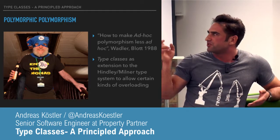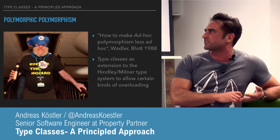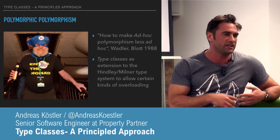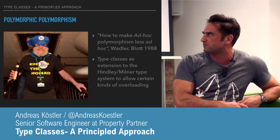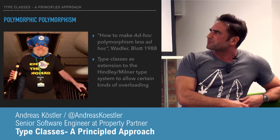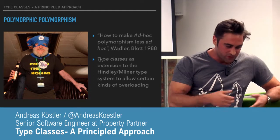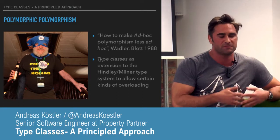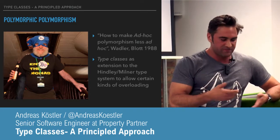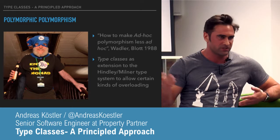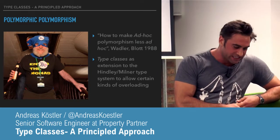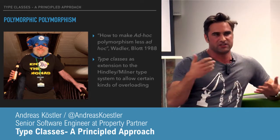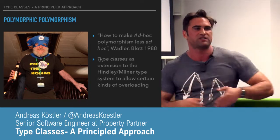Wadler introduced, in a proposal to the Haskell committee, how to make ad hoc polymorphism less ad hoc. He suggested what he called type classes as a way of implementing ad hoc polymorphism. Ad hoc is not a negative term — it basically just means it's not an integral part of the type system. It's a way of doing functional overloading or method overloading, meaning you have a function defined over different types that implements different behaviour depending on the types.